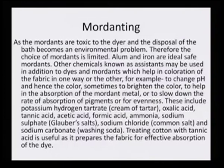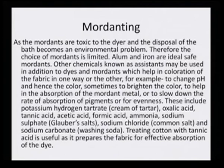Other chemicals known as assistants may be used in addition to dyes and mordants, which help in coloration of the fabric in one way or the other — for example, to change pH and hence the color, sometimes to brighten the color, to help in the absorption of the mordant metal, or to slow down the rate of absorption of pigments, or for evenness. There are many other chemicals used during the natural dyeing processes, but the role of mordant is undoubtedly the most important.